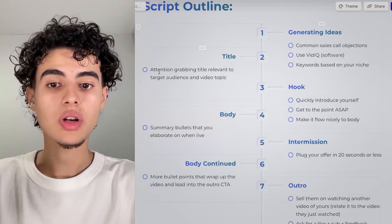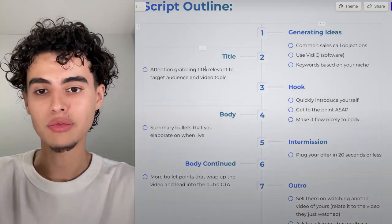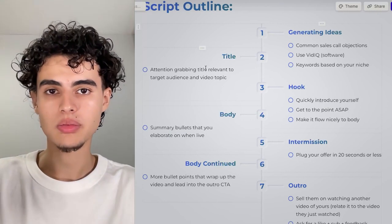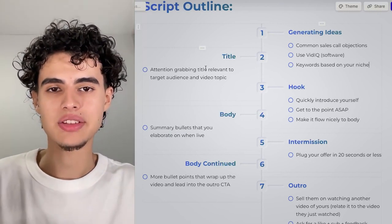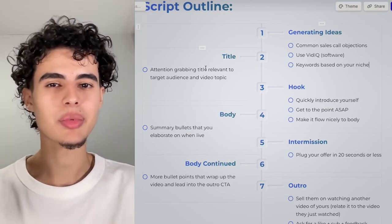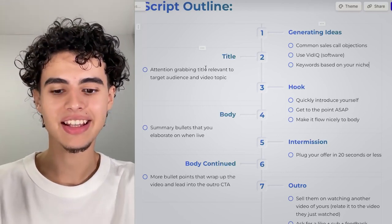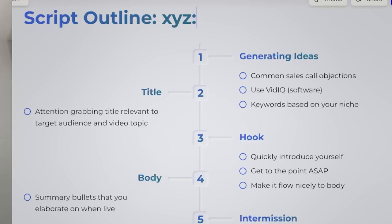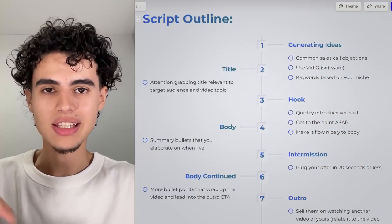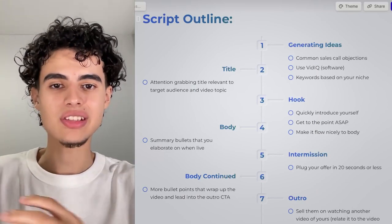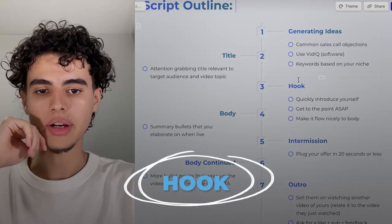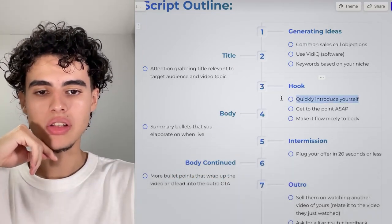For the title, you need an attention-grabbing title relevant to the target audience and video topic. Usually you want to make your title searchable — make it feel like a sentence. A lot of people try to cut corners and use AI, and the titles end up with a colon in the middle, like two titles put together. It needs to flow in one uniform fashion.